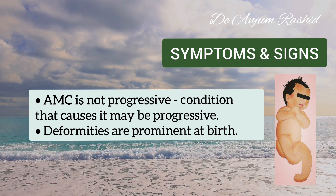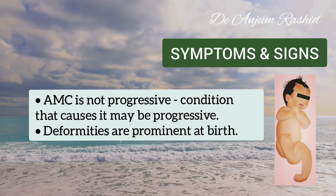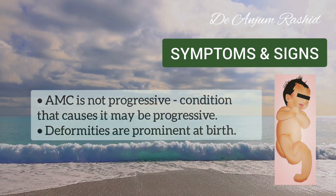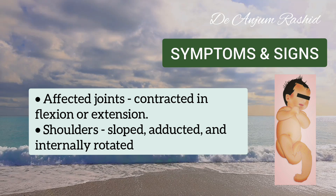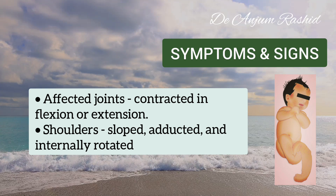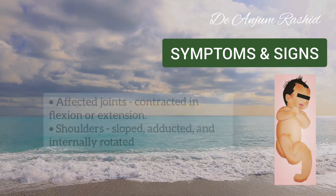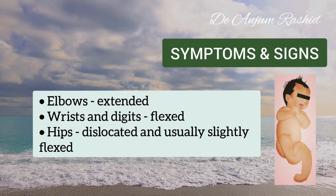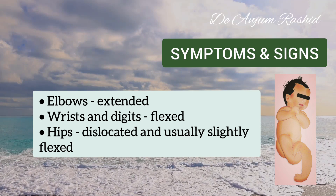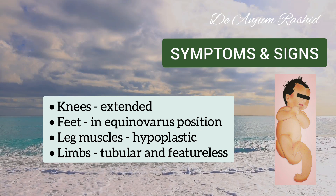Arthrogryposis multiplex congenita is not a progressive disease. However, the condition that causes it may be progressive — for example, muscular dystrophy. The deformities are prominent at birth and affected joints are contracted in flexion or extension. In the classic manifestation of AMC, shoulders are sloped, adducted, and internally rotated. The elbows are extended and the wrist and digits are flexed. Hips may be dislocated and are usually slightly flexed. Knees are extended and feet are often in the equinovarus position.